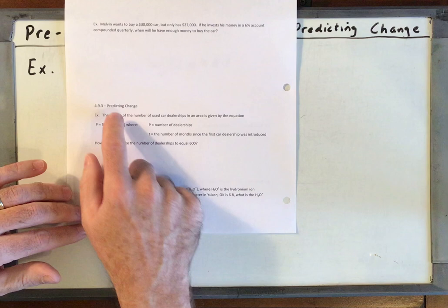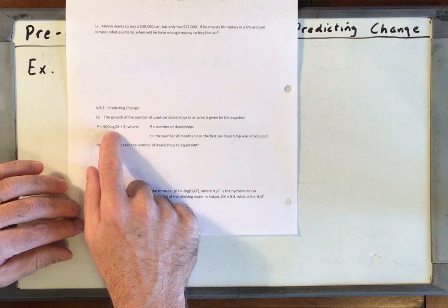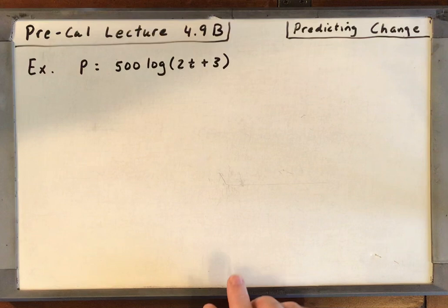Predicting change is what this section is called. The growth of the number of used car dealerships in an area is given by the equation p equals 500 log(2t plus 3), where p is the number of dealerships. That's our total number of dealerships. t is the number of months since the first car dealership was introduced.